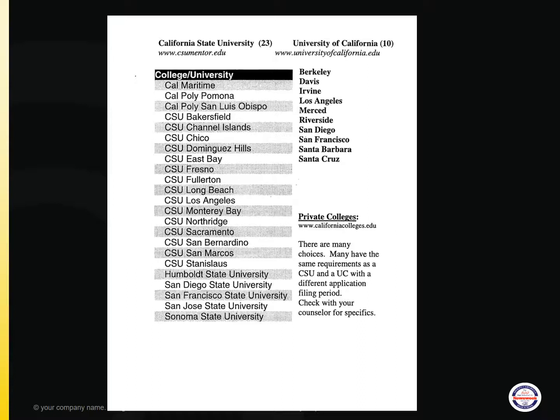On this slide, you will see the 23 Cal States, 10 UC campuses, and a note on private colleges. Remember, it's never too soon to start thinking about where you might want to apply your senior year. If you fulfill your A-G requirements, this is a list of some of the campuses you may apply to.